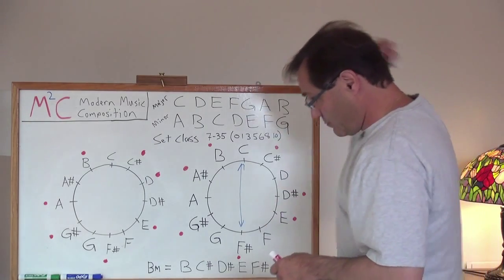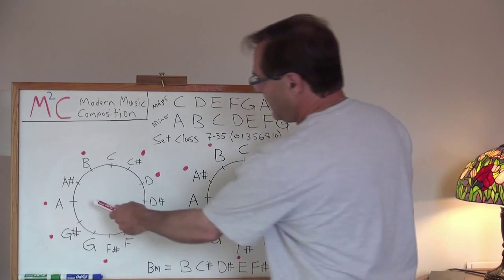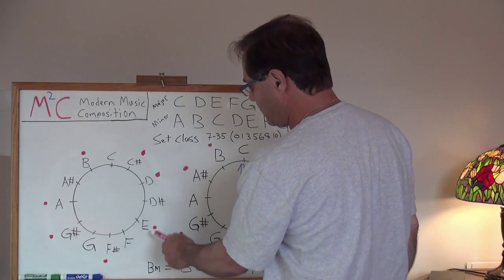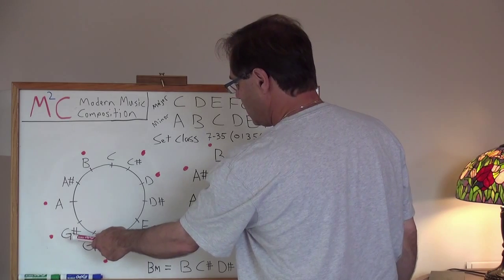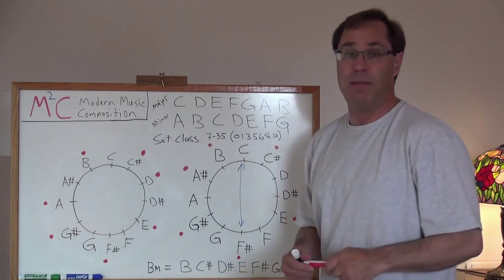Well, what have we produced here? A, B, C sharp, F sharp, G sharp. We produced A major.